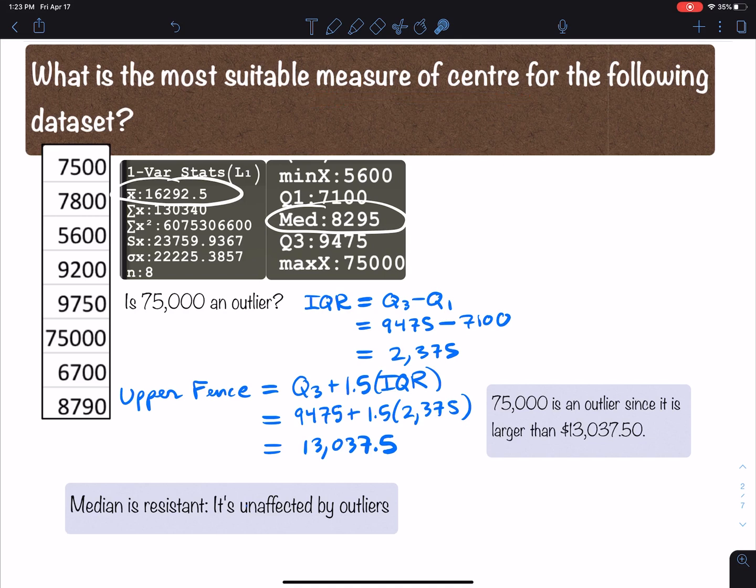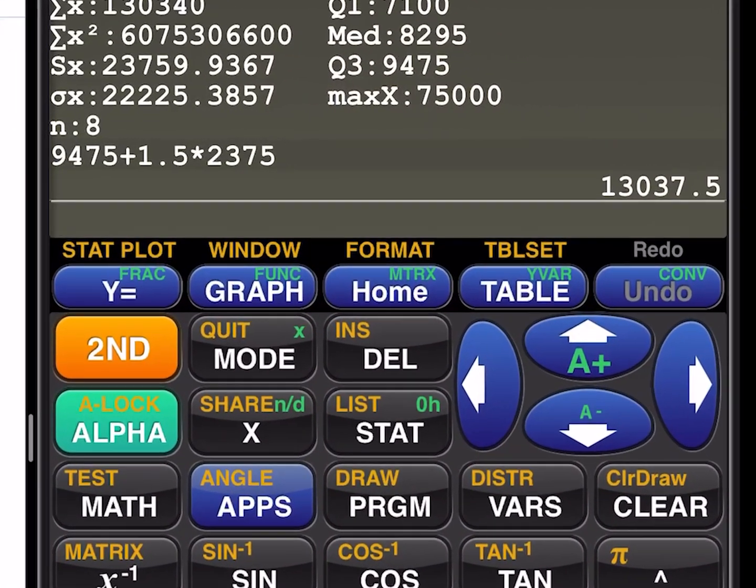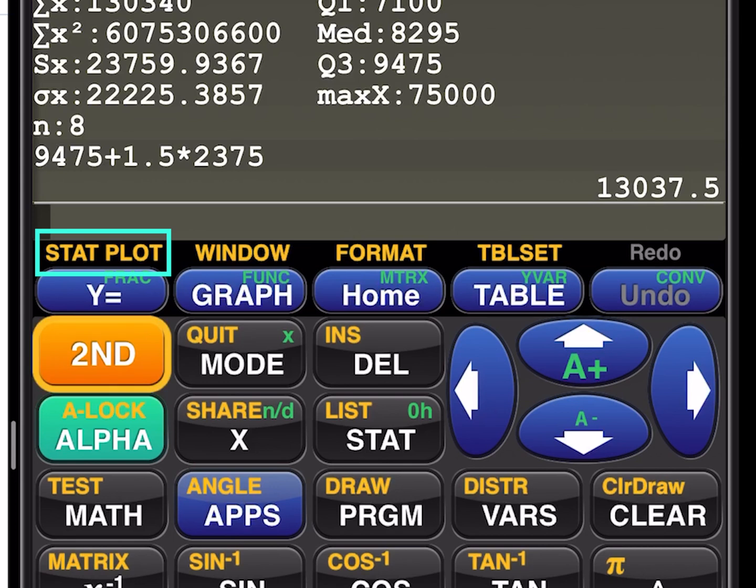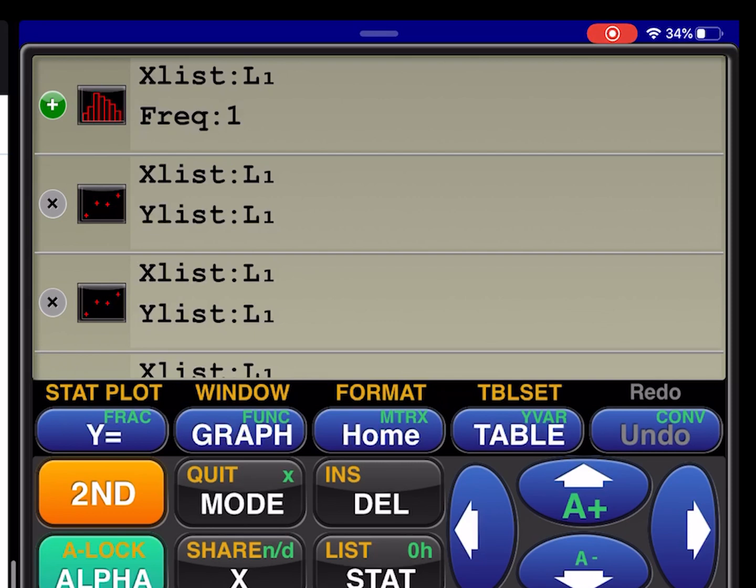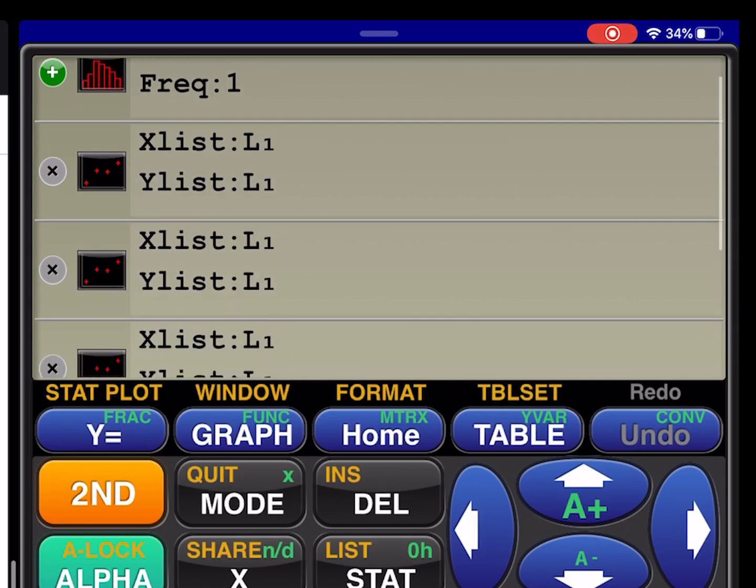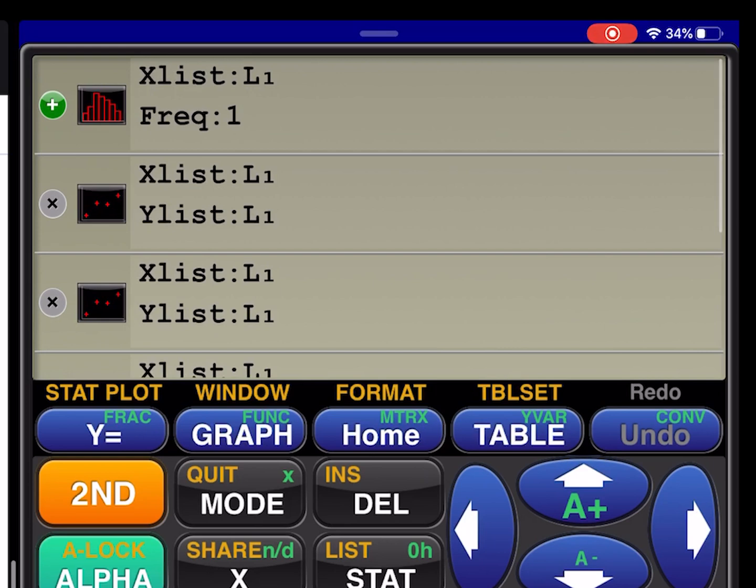So that answers the question on what's the better measure of center. In this case it's the median. Now sometimes you can draw a picture of a histogram in order to get a good picture of the distribution of the data, whether or not it's skewed right or symmetric. So I want to show you how to get a histogram on the TI-84. You're going to go to the stat plot right here, second stat plot, and then you're going to make sure you pick one of these graphs.